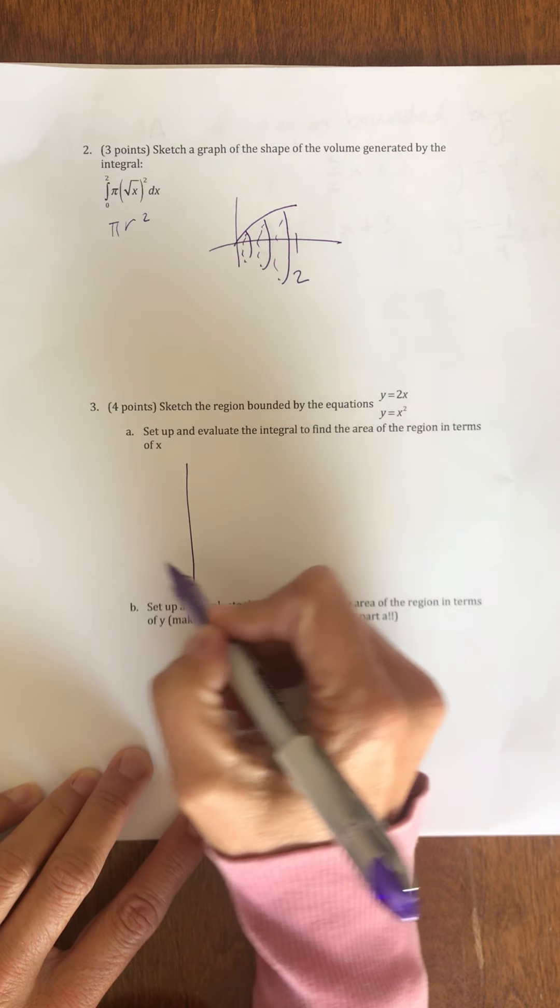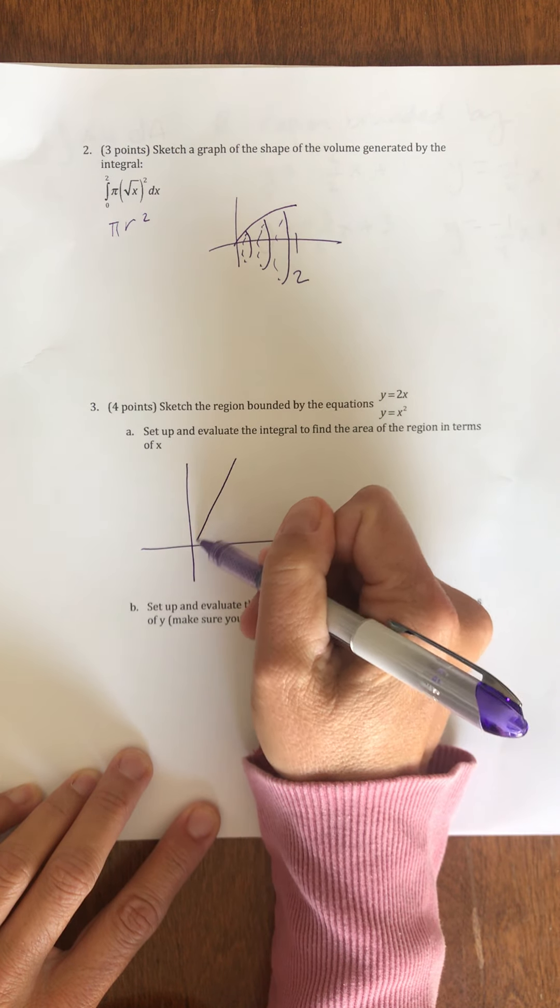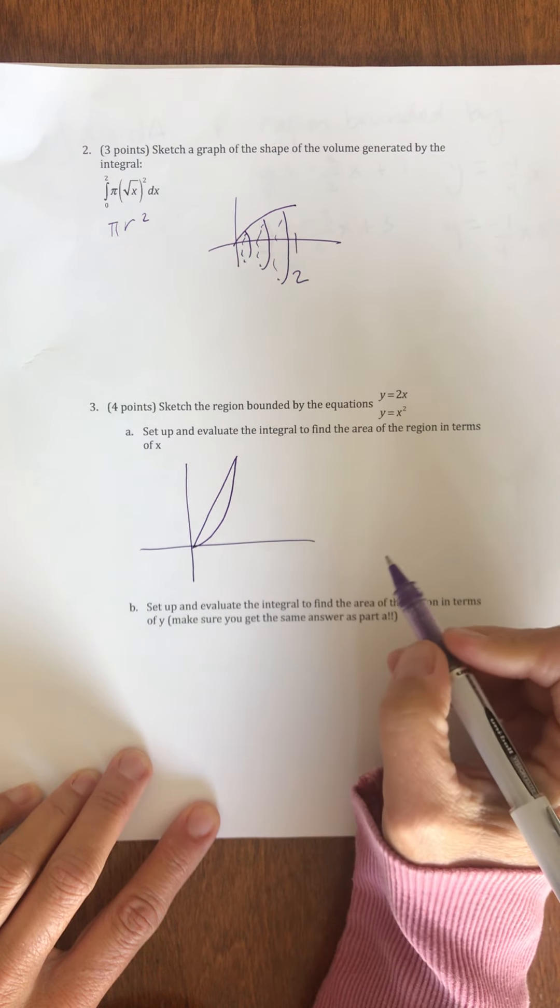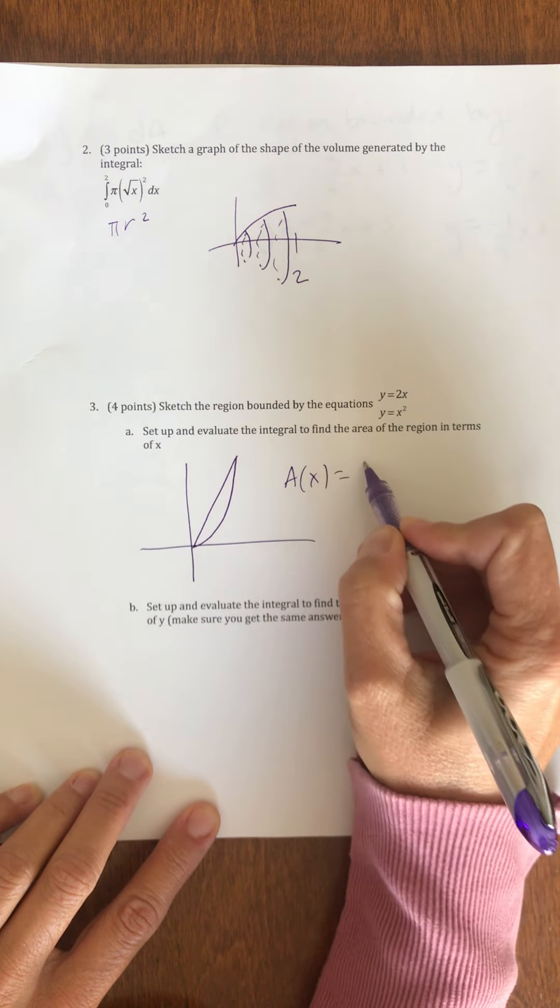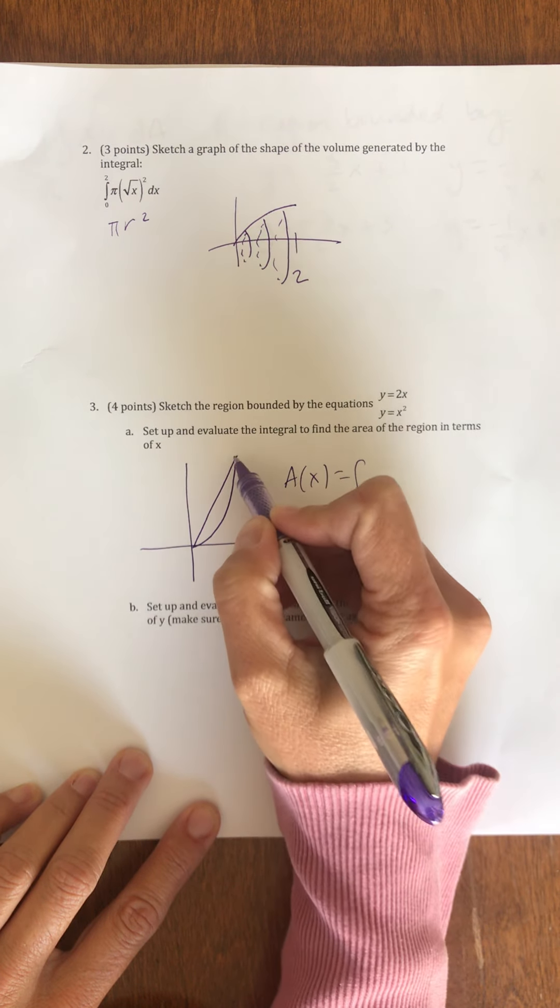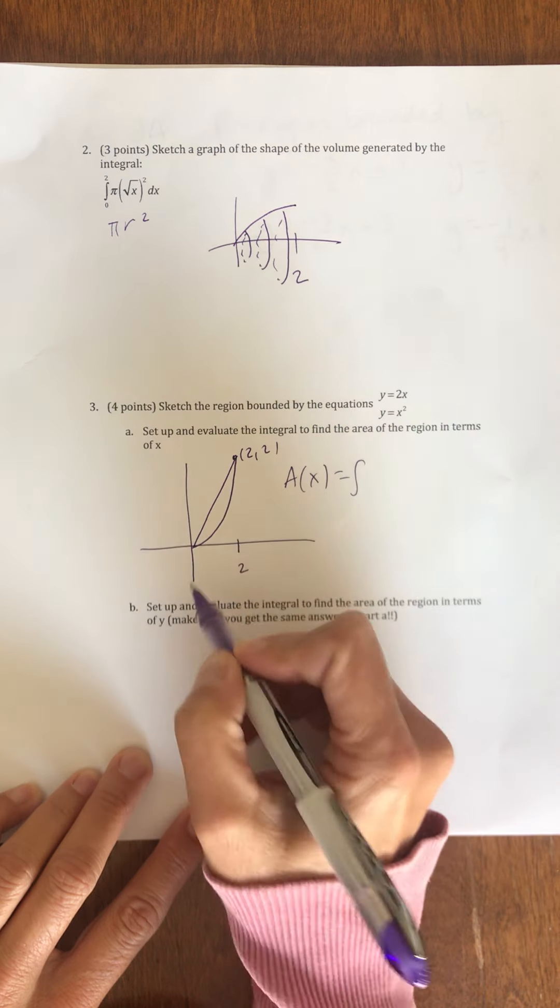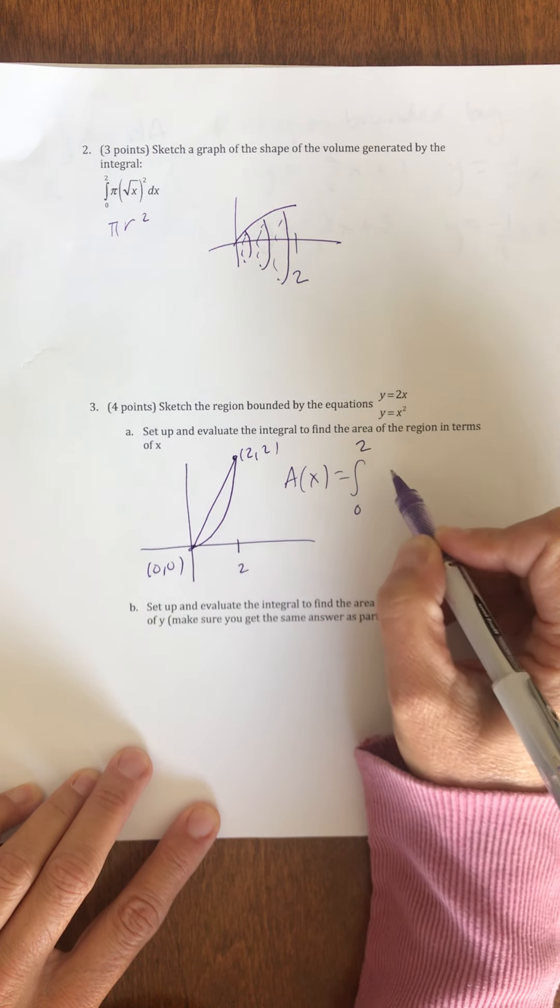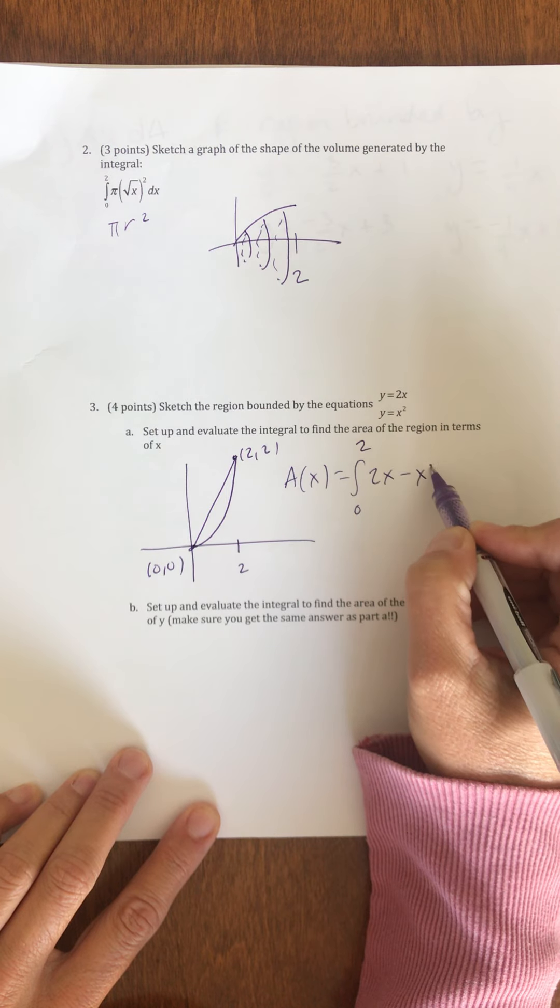Y equals 2x. Y equals x squared. To find the area in terms of x, my area in terms of x is the integral from, well, these intersect at 2, 2 and 0, 0. So, my x-values go from 0 to 2 of top minus bottom.